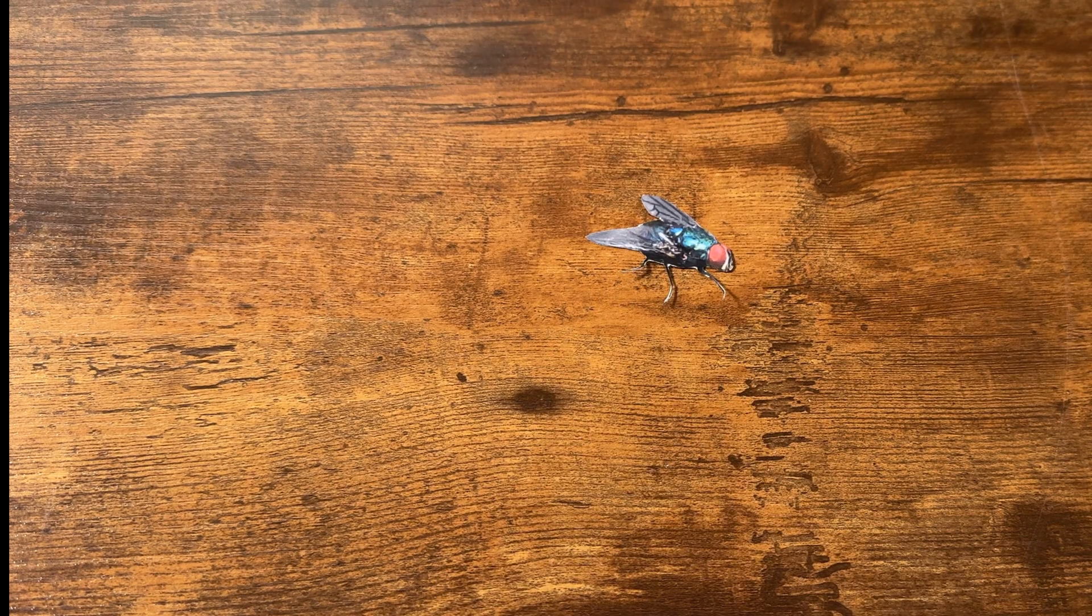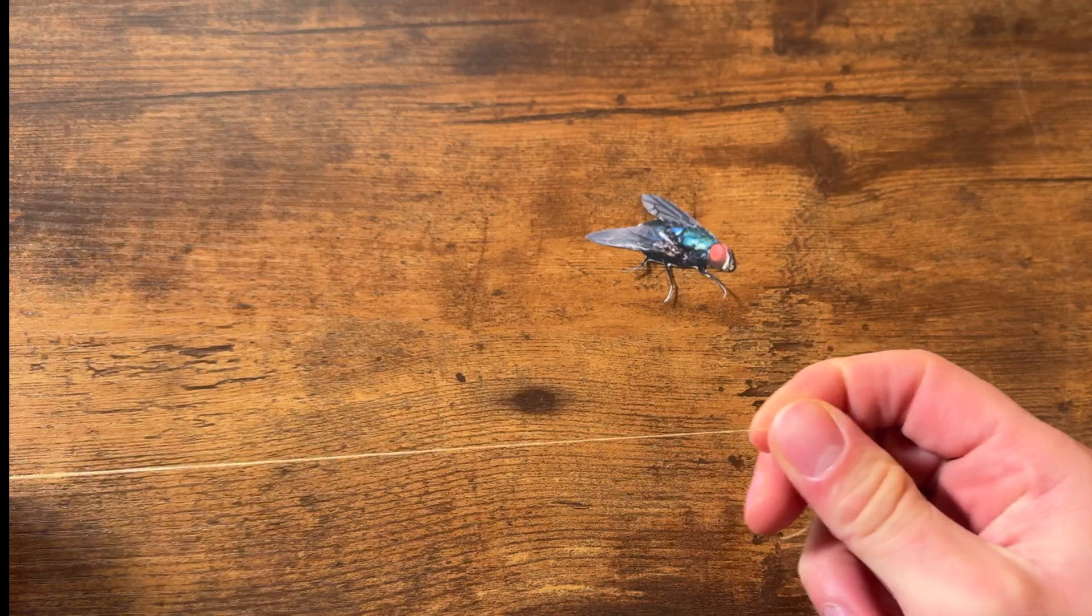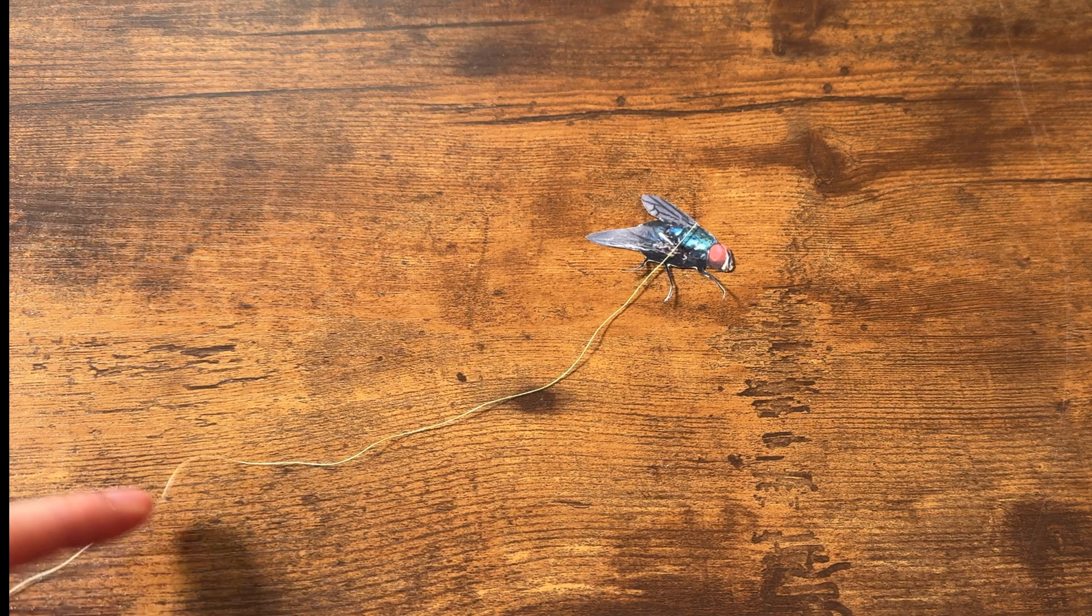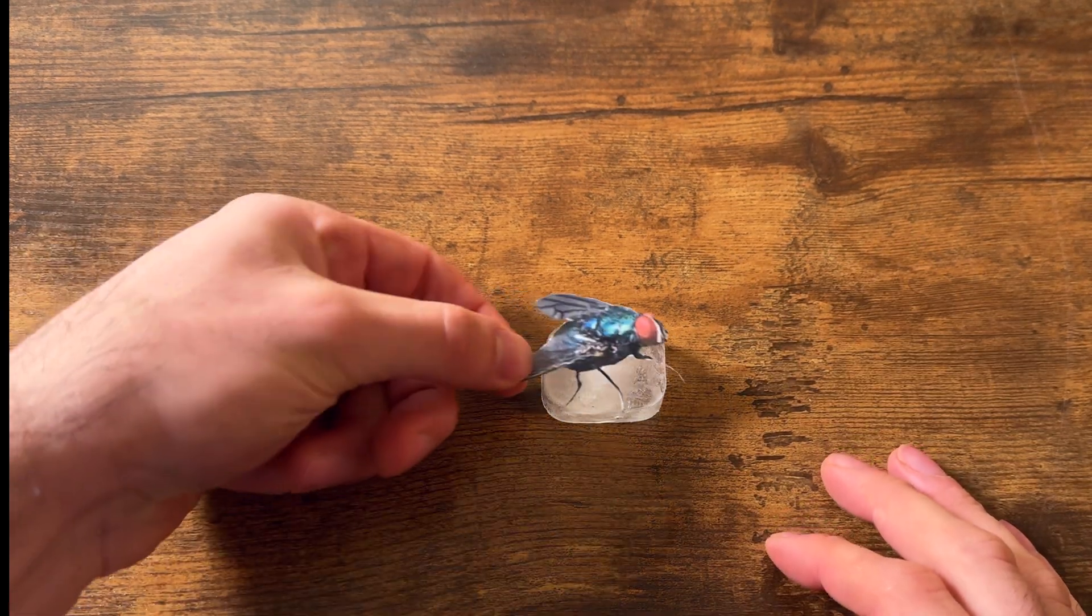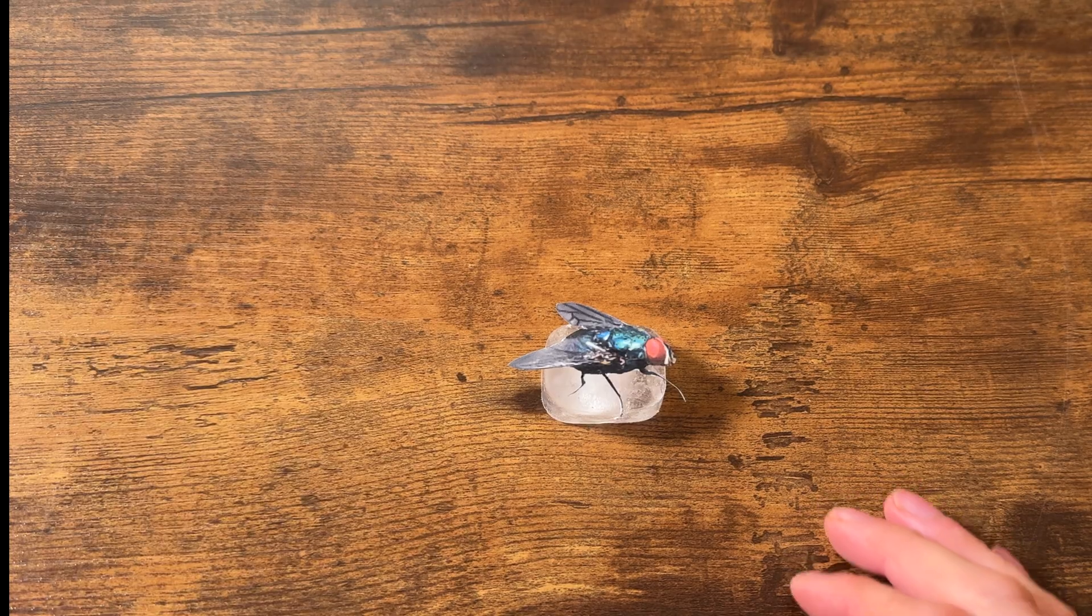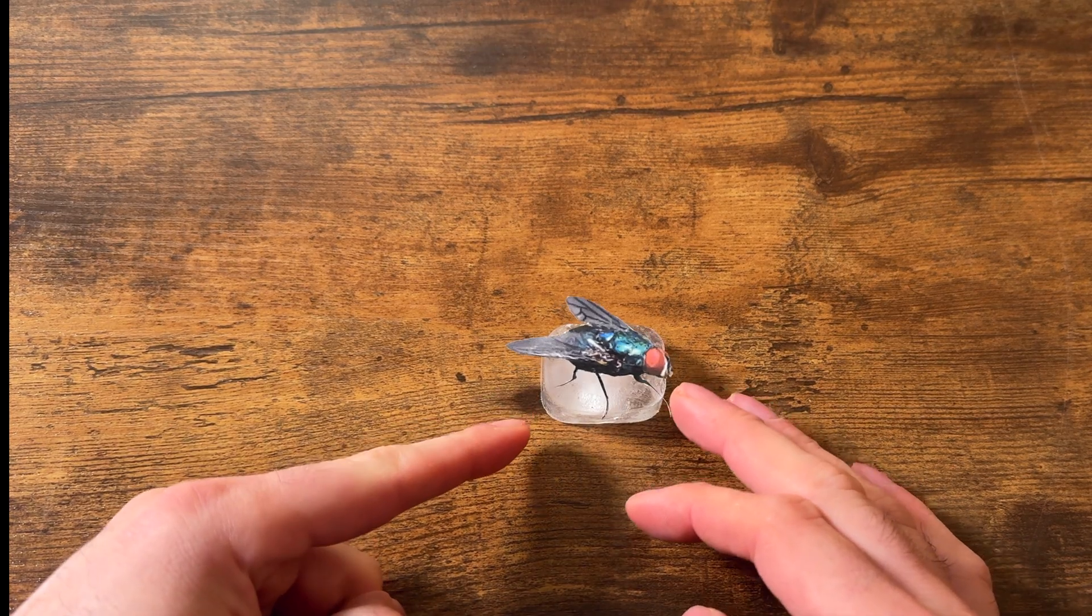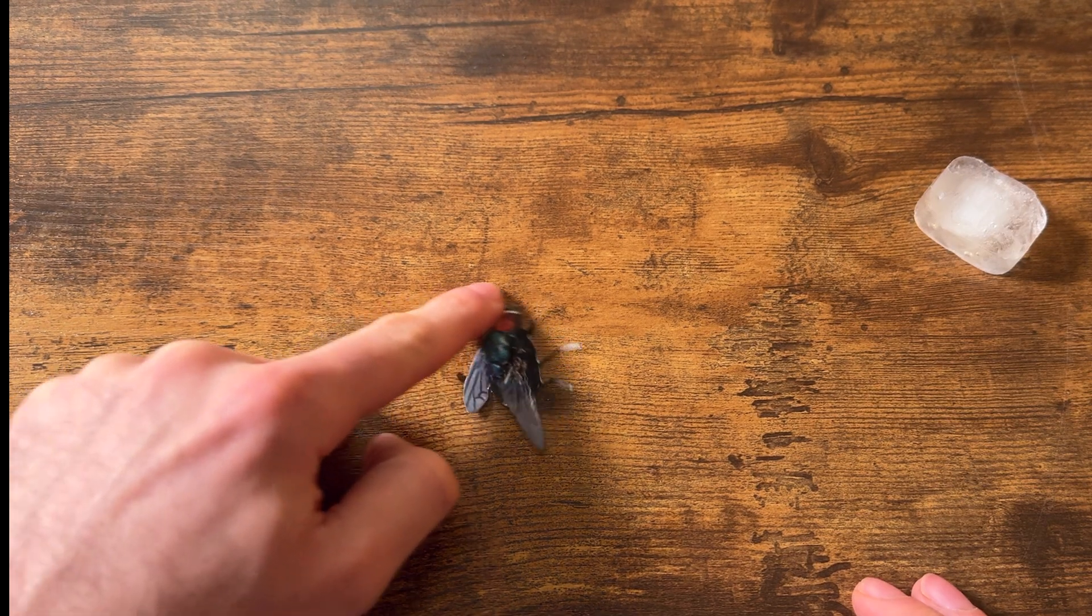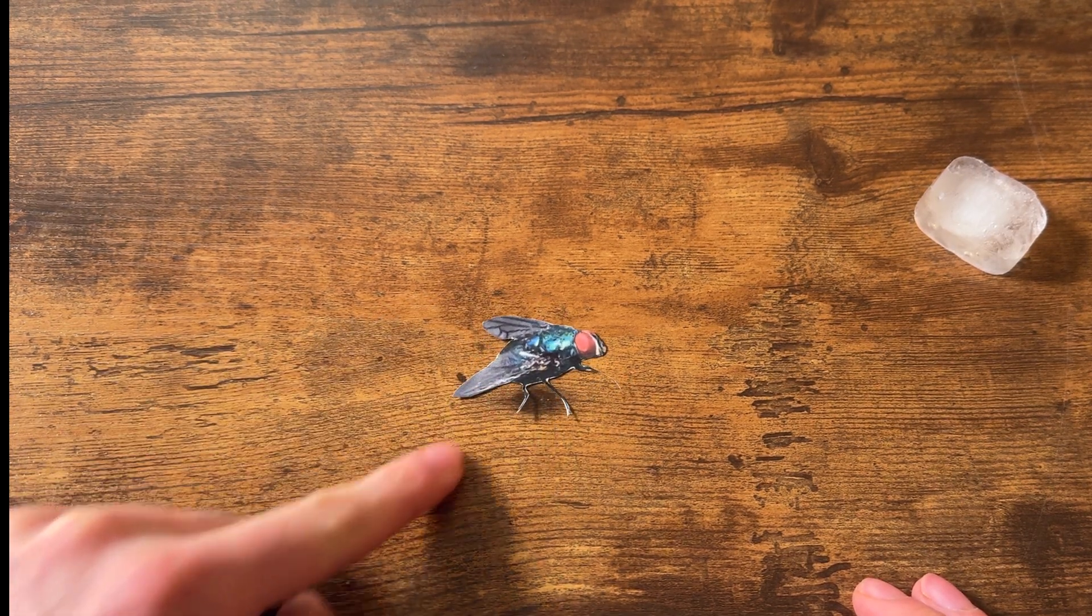So if we have our fly, we need to try and find a way to attach string around it without hurting it so it can fly around freely. But how is that even possible? Well, if we get some ice and put the fly on top of it, the fly's metabolism will slow down and it'll seem like it's dead. Then when we remove it from the ice, it'll warm up and be completely back to normal, only with a leash on it this time.